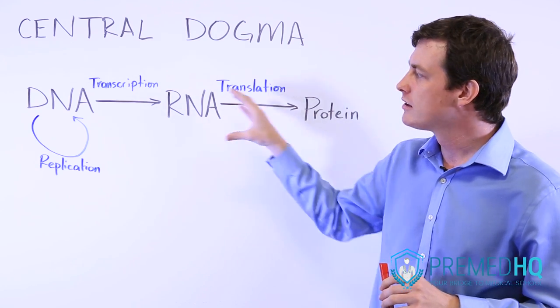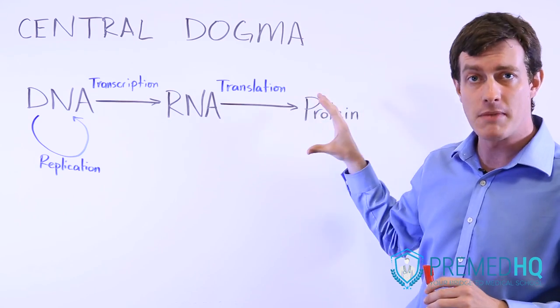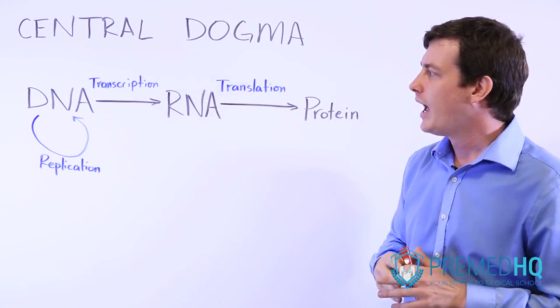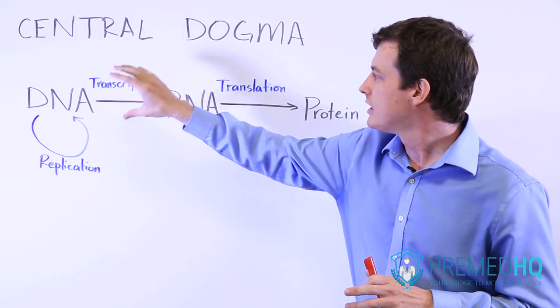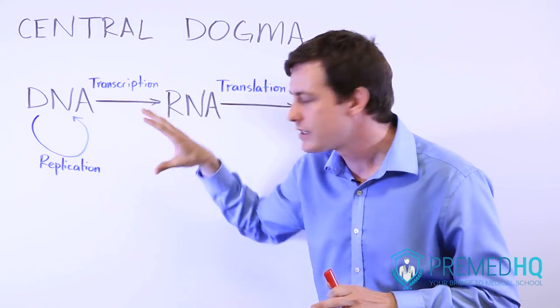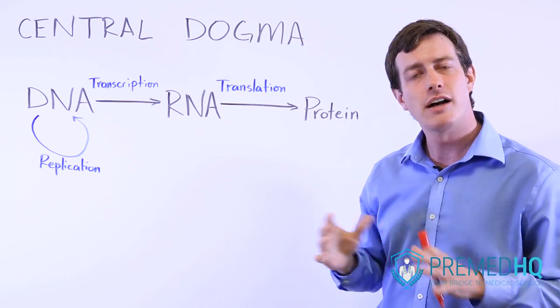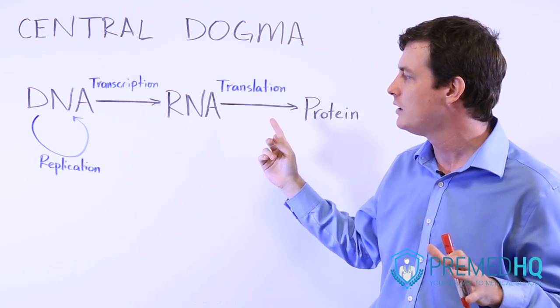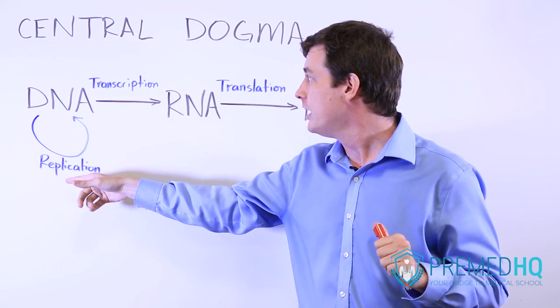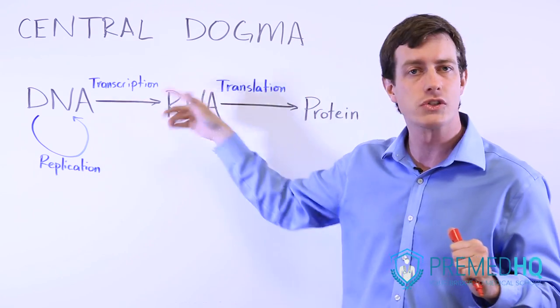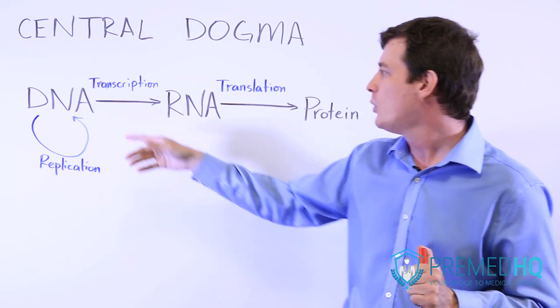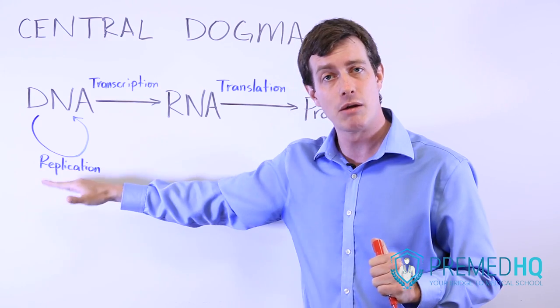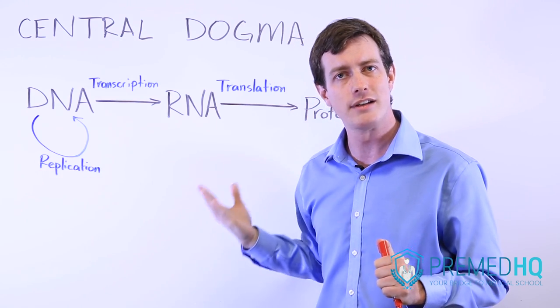And so while you're working through all of these, it's important to keep the central dogma in mind. And we'll have videos going through each step in this process. And if you're able to isolate these three different things as three separate processes, then you'll have a much bigger picture understanding and it will help you answer questions where they might try to trick you into using a DNA replication enzyme to answer a transcription problem or something like that. So know the central dogma, recognize that it is distinct from DNA replication, which is something you see with a lot of cell division.